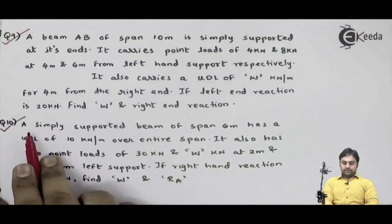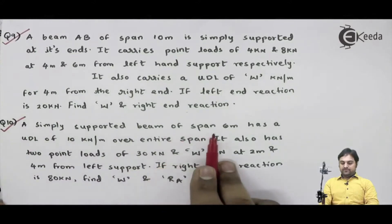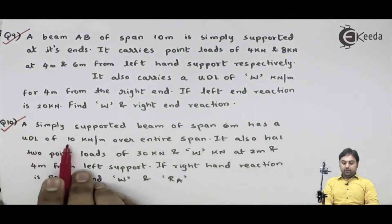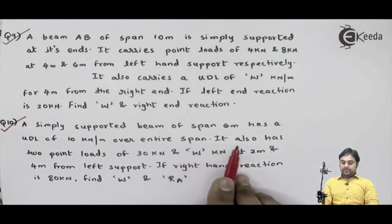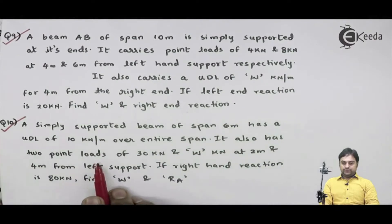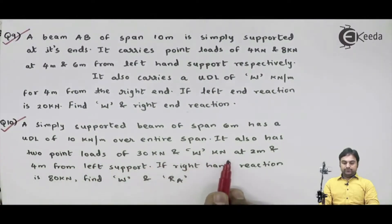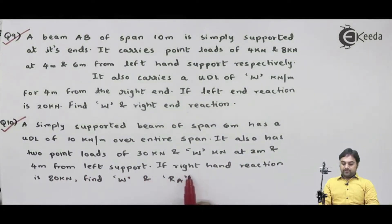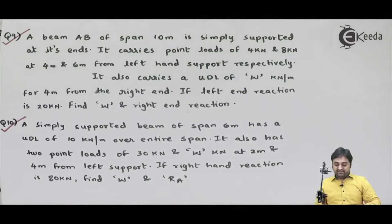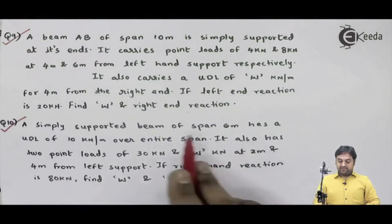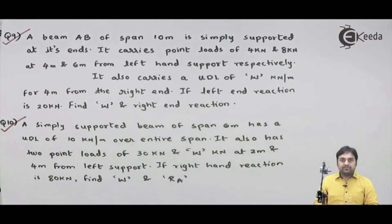Let us take question number 10. A simply supported beam of span 6 meters has a UDL of 10 kilonewton per meter over the entire span. It also has two point loads of 30 kilonewton and w kilonewton at 2 meters and 4 meters from the left support. If the right hand reaction is 80 kilonewton, find w and RA. Let us start by writing the data first.